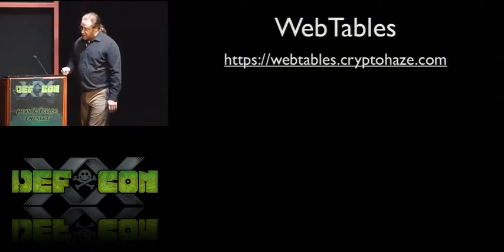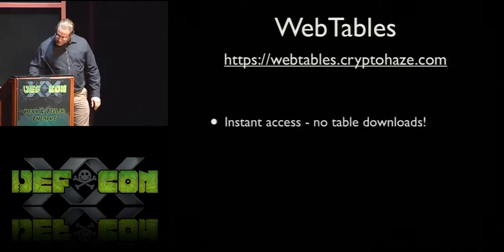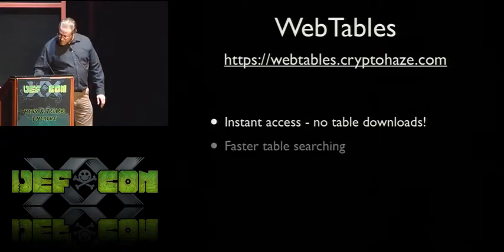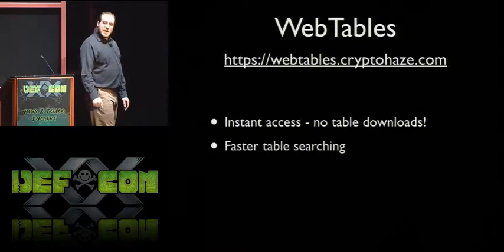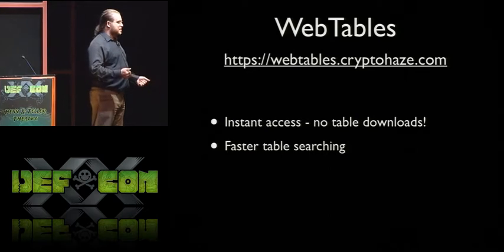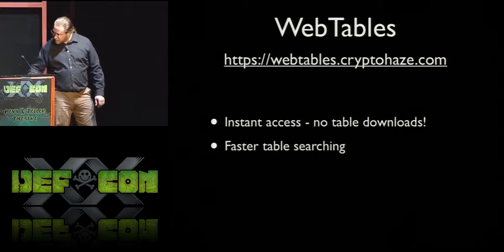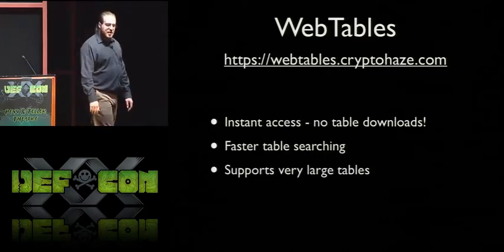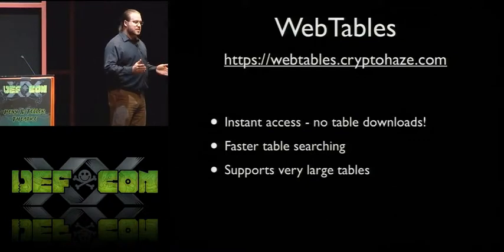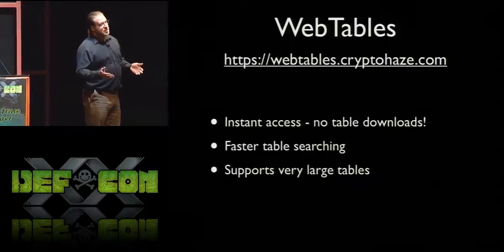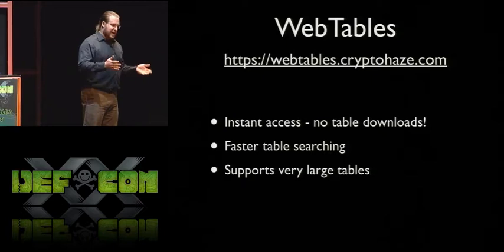In summary, web tables give us instant access to rainbow tables with no need to download them. The table searching can actually be much faster than you're capable of doing locally because of the solid state drives that make sense for serving lots of users. And we can support very large tables — those 60 terabyte tables for length nine. You can have full access to them without having to have 60 terabytes of storage. You can use your rainbow tables and not have to download them.